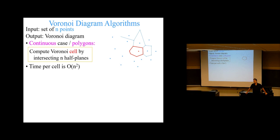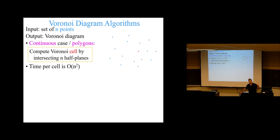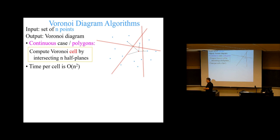A half plane is an unbounded convex polygon with only one edge. We already know how to do convex polygon intersection — from last lecture we had a subroutine to do that in linear time. So you intersect all these half planes one at a time, and it's linear time with every growing intersection along the way. That's n squared if you just do it naively — call that subroutine n times, one for every additional half plane.